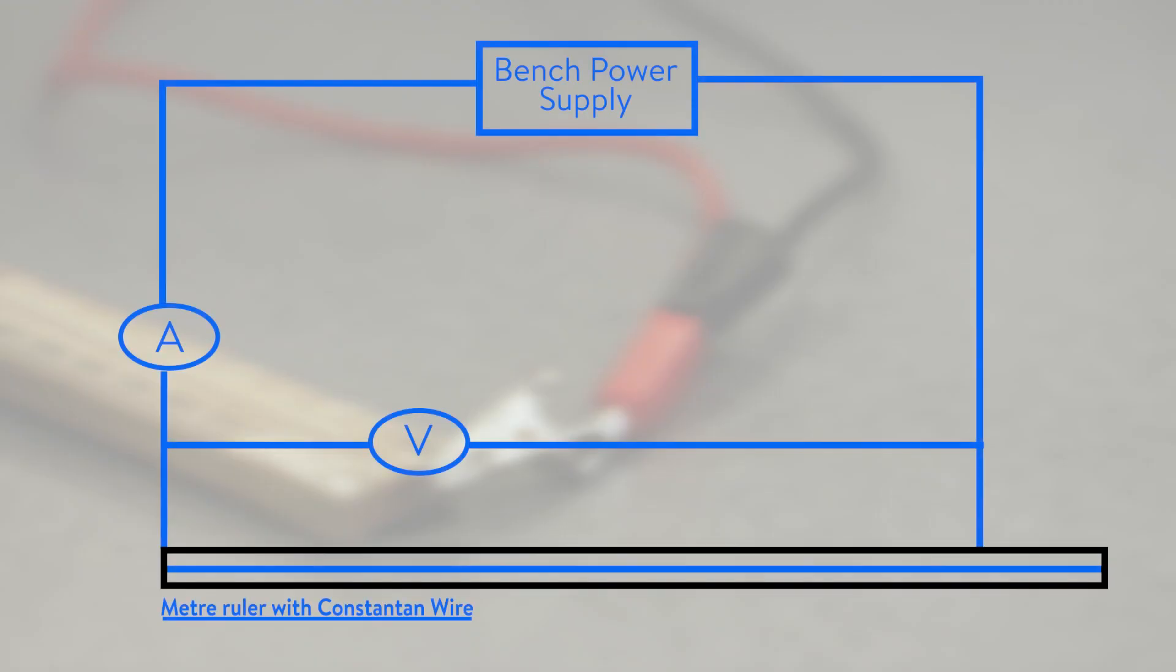Connect the rest of the circuit as per this diagram. Remember always to connect the ammeter in series with the wire and the voltmeter in parallel around the resistance ruler.